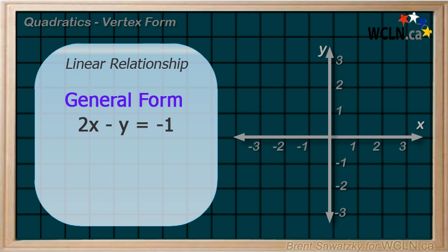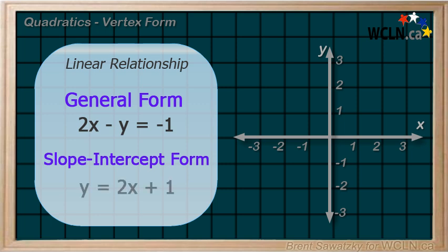But we recall that if we first switch the equation from general form to slope-intercept form, or y equals mx plus b form, well, a little algebra, we get y equals 2x plus 1, and in this form we can easily see that the y-intercept is 1, and the slope is 2.